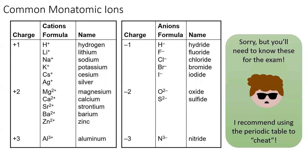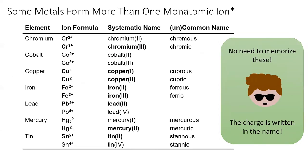You will need to know the name and the charge of these monatomic ions on exams — you should use the periodic table for help. You will also need to know the name and charge for transition metal ions, but that's significantly easier since the charge is written in the name.